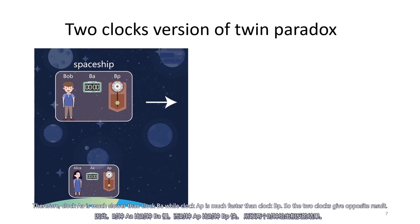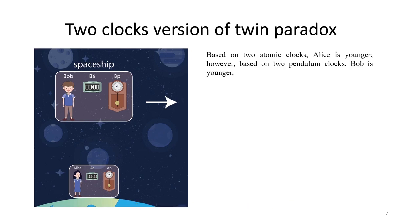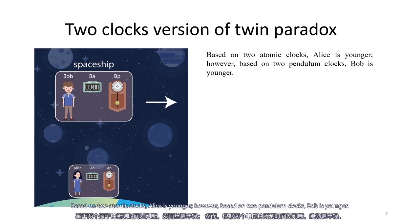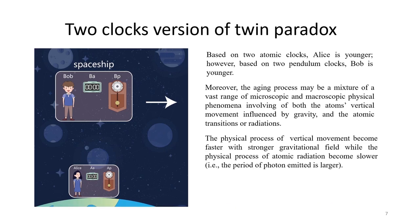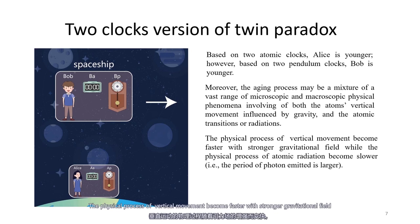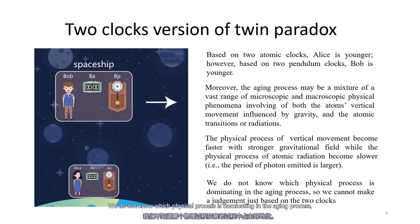So the two clocks give opposite results. The question is: who would age faster, Alice or Bob? Based on the two atomic clocks, Alice is younger. However, based on the two pendulum clocks, Bob is younger. The aging process may be a mixture of a vast range of microscopic and macroscopic physical phenomena involving both atoms' vertical movements influenced by gravity and atomic transitions or radiation. Physical processes of vertical movements become faster with stronger gravitational fields, while physical processes of atomic radiation become slower. We don't know which physical process dominates the aging process, so we cannot make judgments based on just the two clocks.